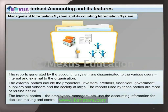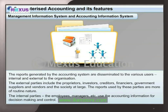The reports generated by the accounting system are disseminated to various users, both internal and external to the organization. External parties include proprietors, creditors, financiers, government, suppliers, vendors, and society at large; the reports used by these parties are more routine in nature. Internal parties such as employees and managers use the accounting information for decision making and control.